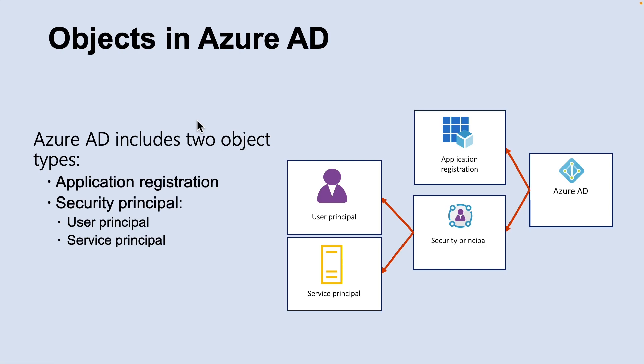The Microsoft Identity Platform supports industry standard protocols such as OAuth 2.0 and OpenID Connect. An Azure AD application is defined by its one and only application object, which resides in the Azure AD tenant where the application was registered. To access resources secured by an Azure AD tenant, the entity that requires access must be represented by a security principal — this is true for both users and applications. The security principal defines the access policy and permissions for the user or application in the Azure AD tenant.